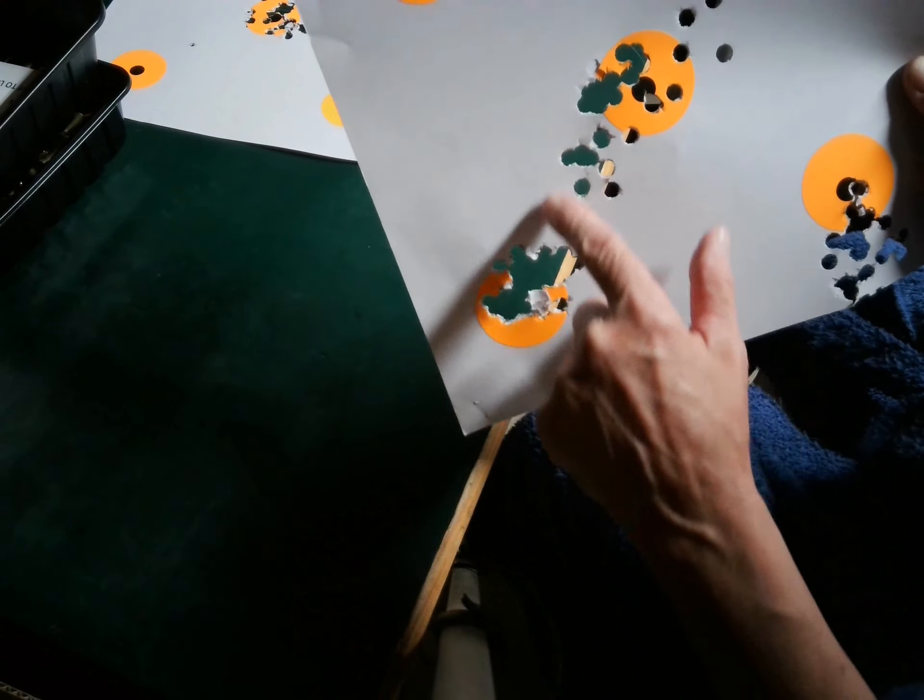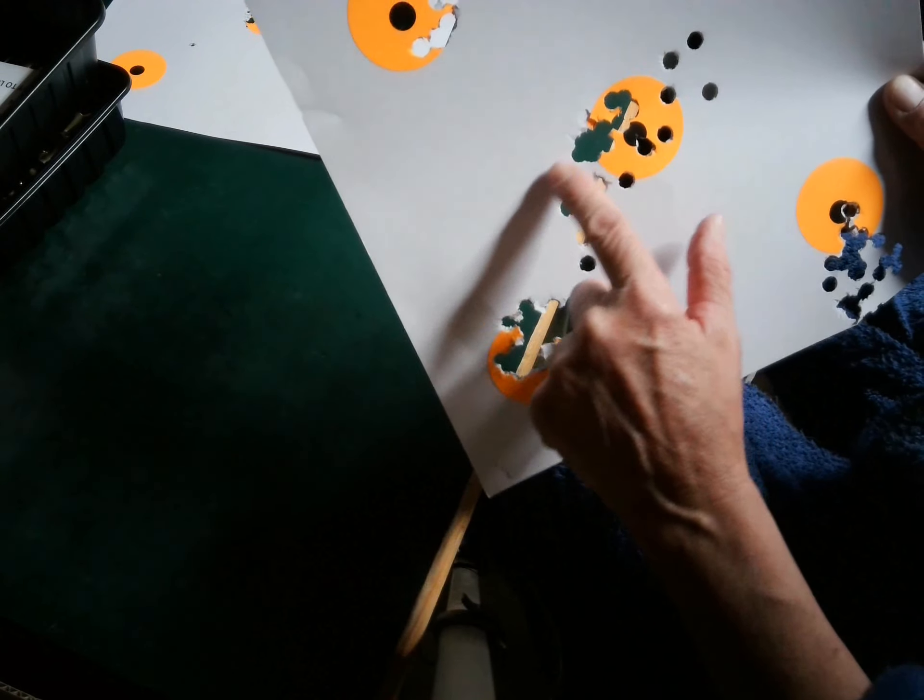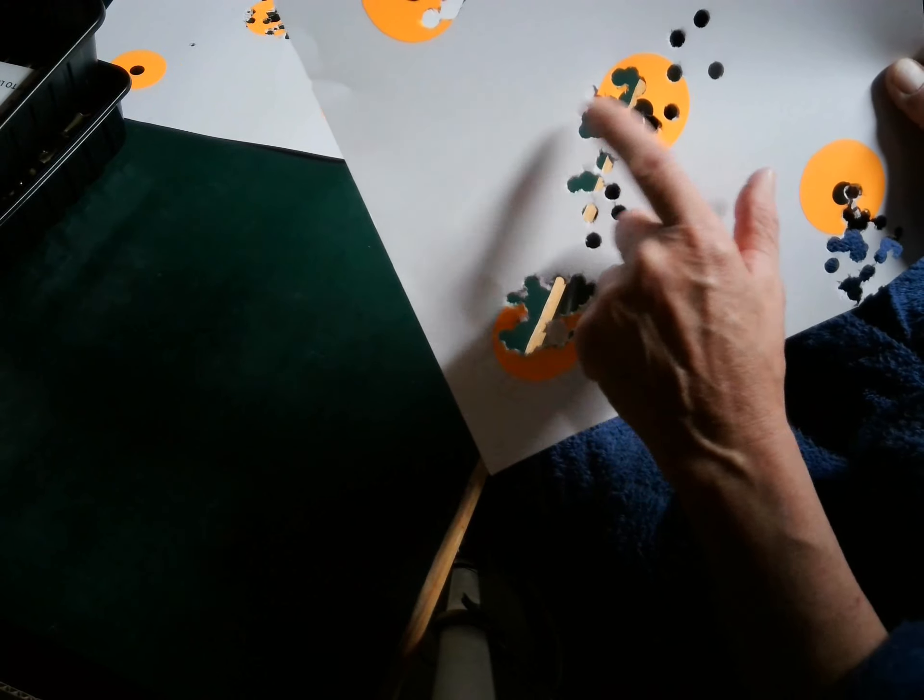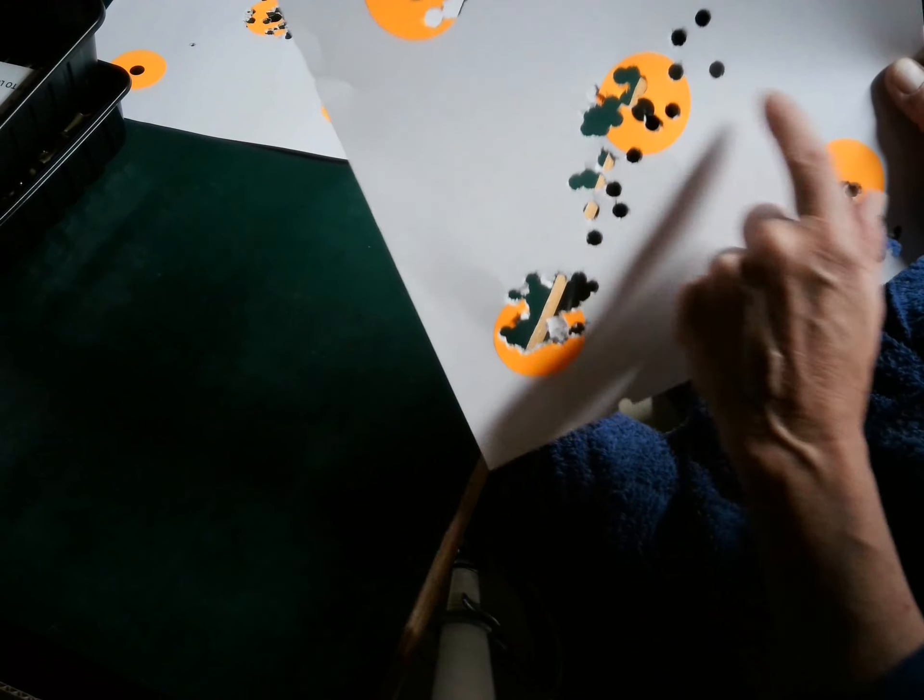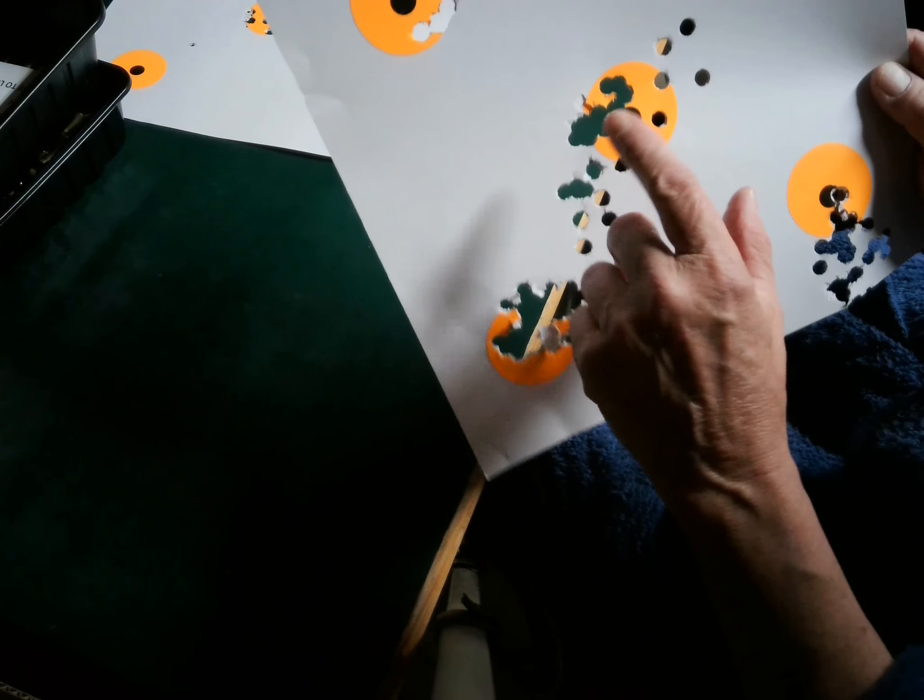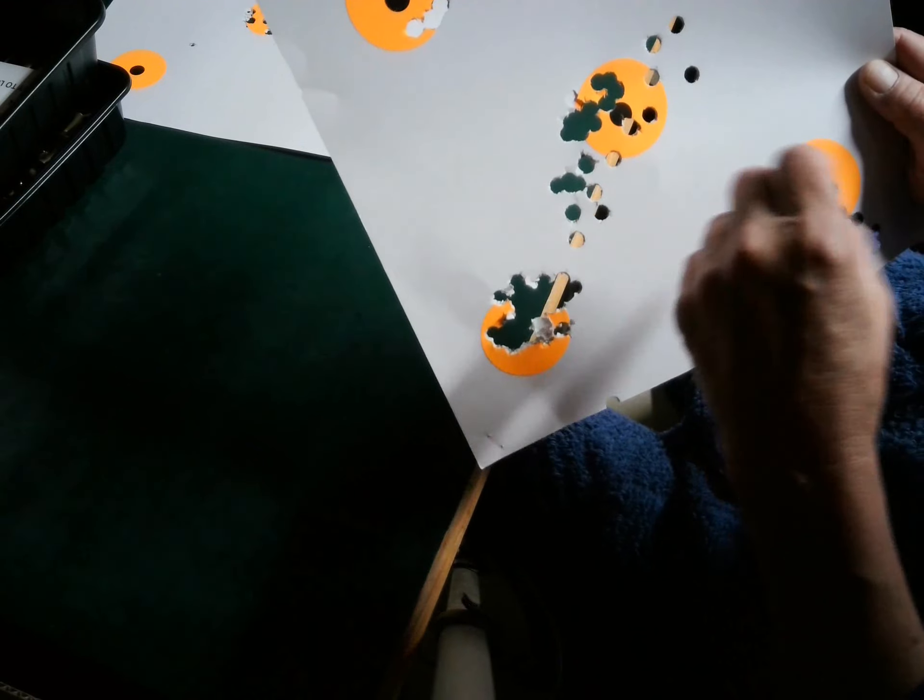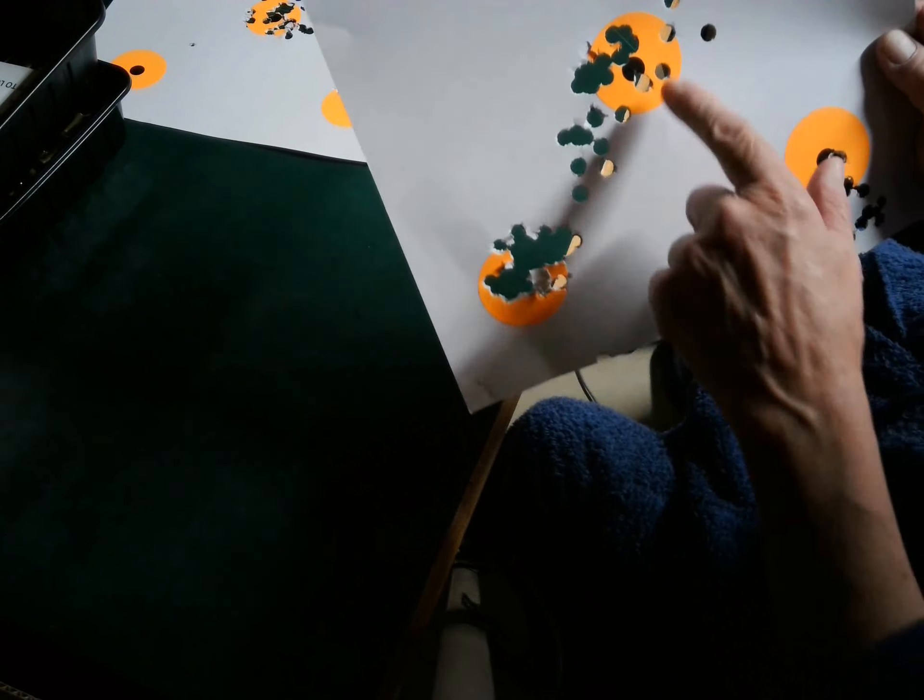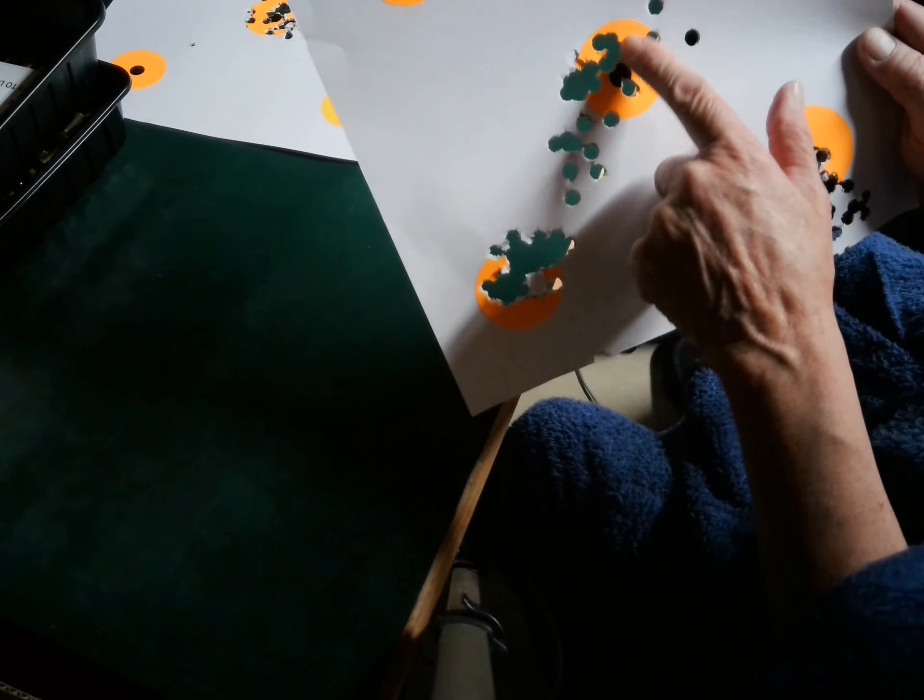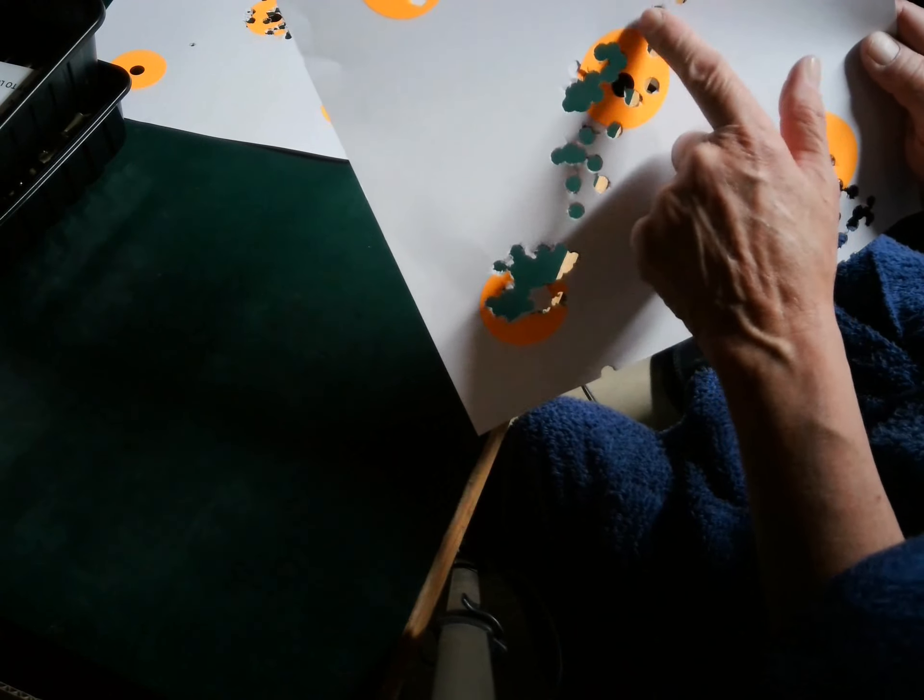This is the first shots over here, moved up and over to the right a bit. This is another five or ten shots. These are full wad cutters, only like 2.6 grains of bullseye. Okay, so we got it, we got that shooting right, but I wanted to move it over because I like shooting a little high and right.